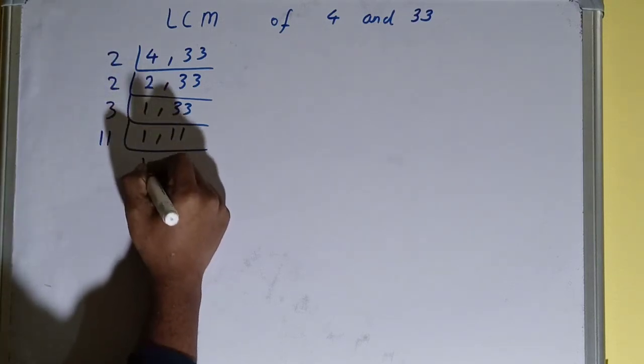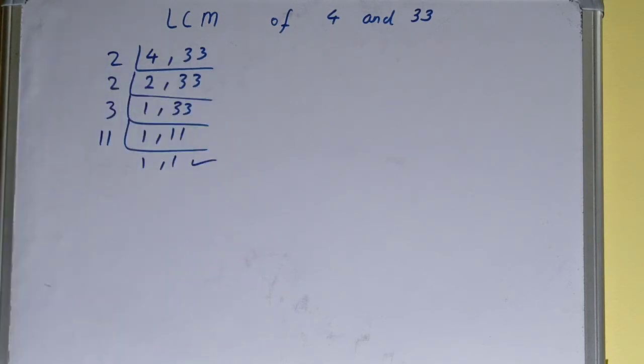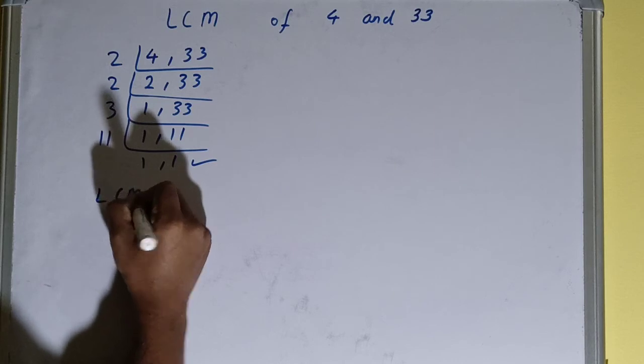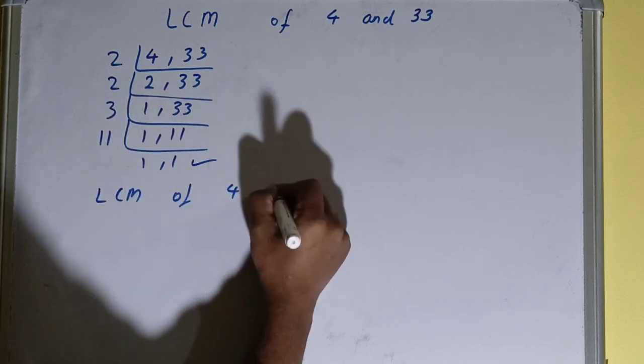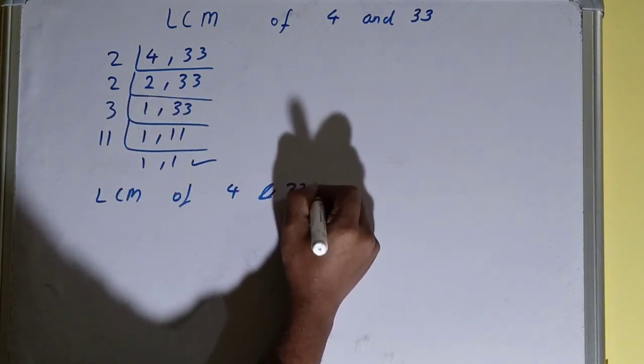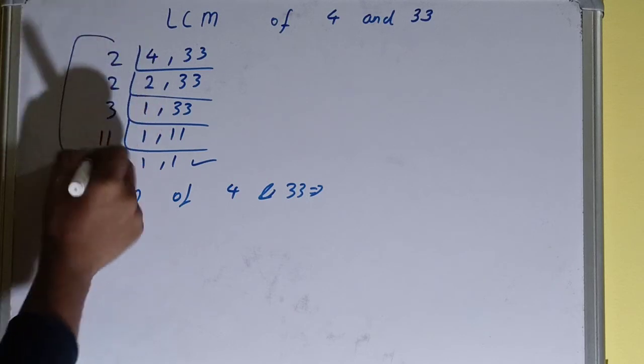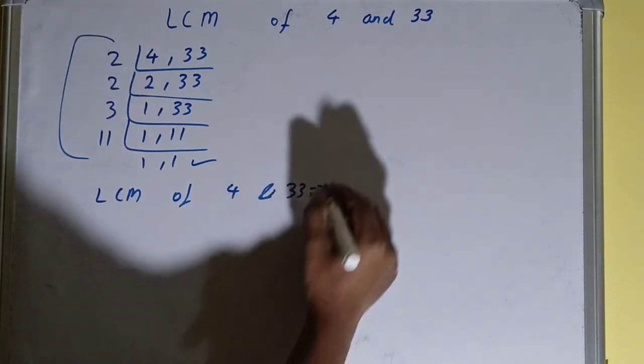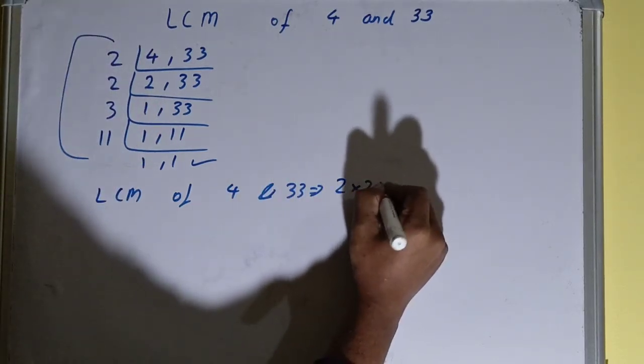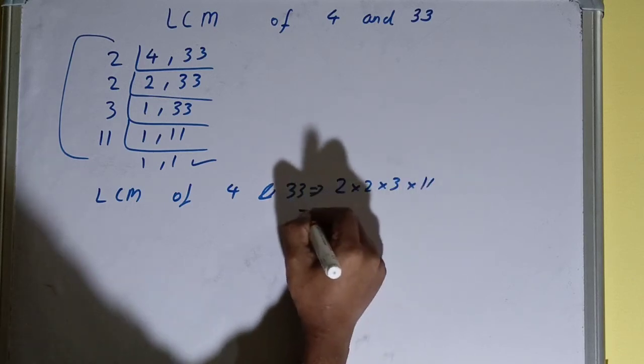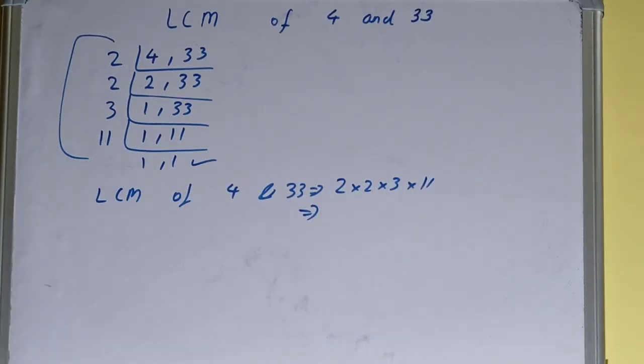When you do so, you'll be getting 1, 1. Once you get 1, 1, you need to stop and do one last thing. That is, LCM of 4 and 33 equals multiply whatever you have on the left-hand side: 2 × 2 × 3 × 11. So you will be getting the answer.